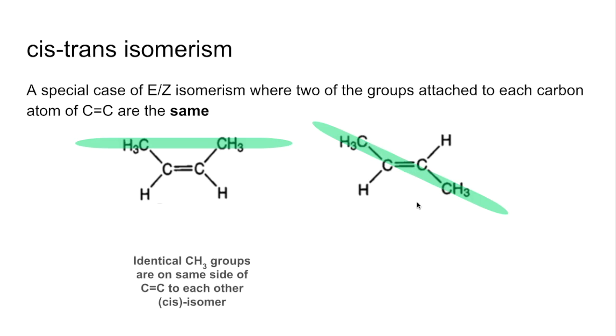When the identical groups are on the same side of the C=C double bond, we call this the cis isomer. When they are on opposite sides or diagonally opposite to each other, that's what we call the trans isomer.